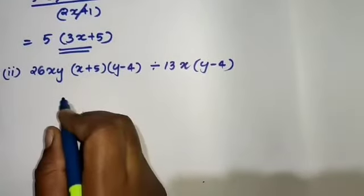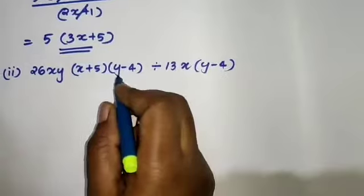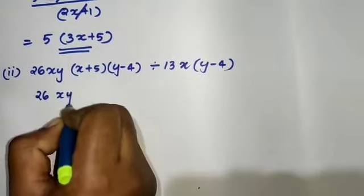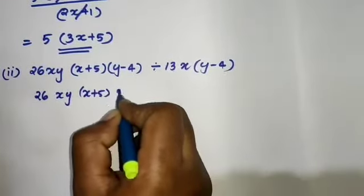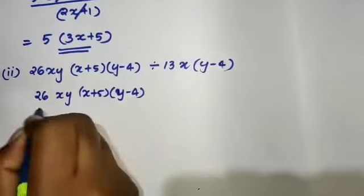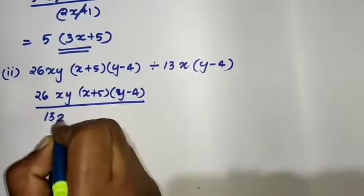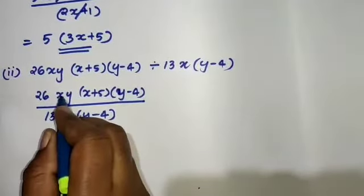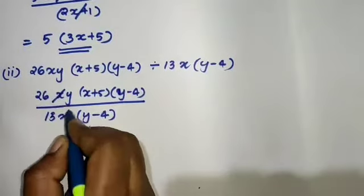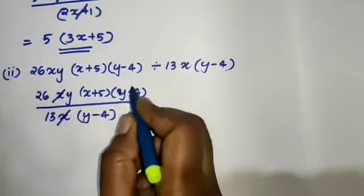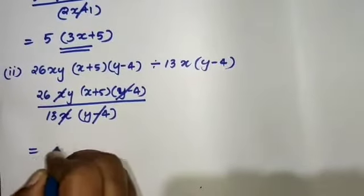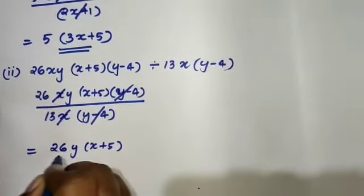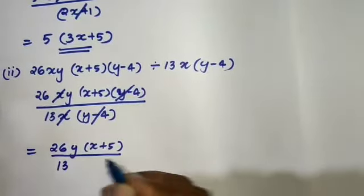Next is 26xy into x plus 5 into y minus 4, divided by 13x into y minus 4. That is 26xy into x plus 5 into y minus 4 divided by 13x into y minus 4. So it is equal to 26y into x plus 5, divided by 13.